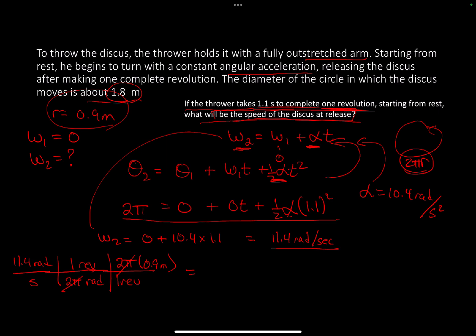So 11.4 times 0.9 equals 10.3 meters per second. As the discus thrower spins and releases, the discus travels at 10.3 meters per second.